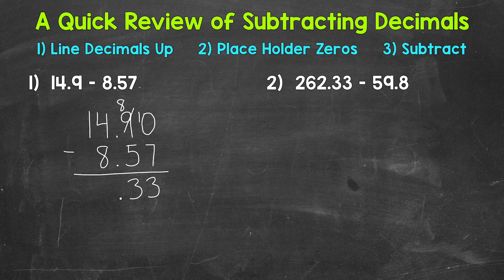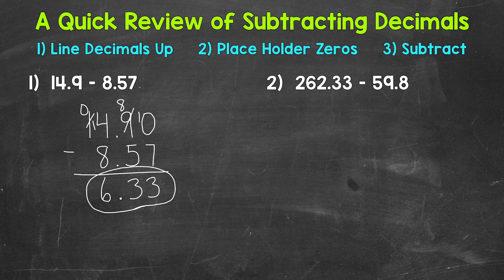Then we move to the ones place, 4 minus 8, we need to borrow from the tens place here. So that's a 0, and that's a 14. So 14 minus 8 is 6. And we are done, 6 and 33 hundredths.